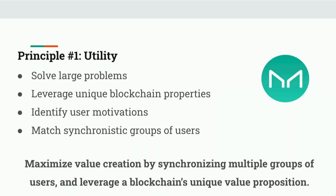For example, permissionlessness is a quality of a blockchain or smart contract that you're not going to find in Web 2 or TradFi. Credible neutrality is another one, and censorship resistance. If you have these kinds of properties, your protocol will have unique utility to users, creating a unique value proposition. When designing for utility, you also want to identify the reasons your users want to use your protocol, which helps you find synchronicities in groups of users that might be included to give it additional utility and value capture.